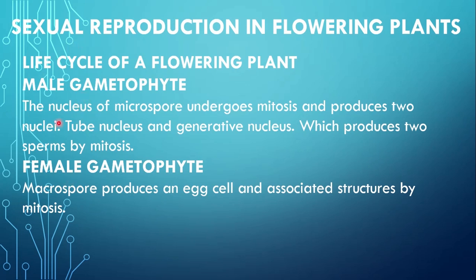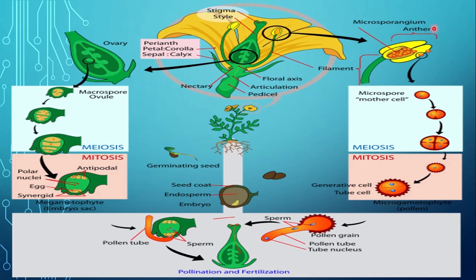Let us see ke micro aur macrospore se kis tarah se male gametophyte aur female gametophyte bante hain. First, microspore se male gametophyte kaise banta hai. The nucleus of microspore undergoes mitosis and produces two nuclei: one is the tube nucleus and another is the generative nucleus. Then yeh generative nucleus divide hokar two sperms ko form karta hai. Is tarah ek germinating microspore mein two sperms aur ek tube nucleus present hota hai. Is stage pe is microspore ko male gametophyte bola jata hai.